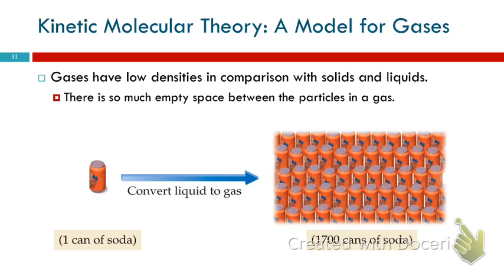The gas would occupy the space of 1,700 cans of soda. So the gas would be 1,700 times larger in volume. That's pretty big. Gases are much less dense, very low densities.